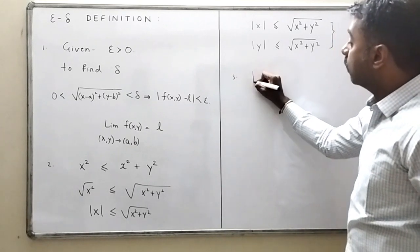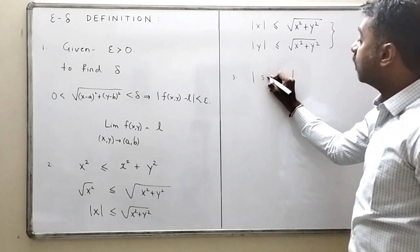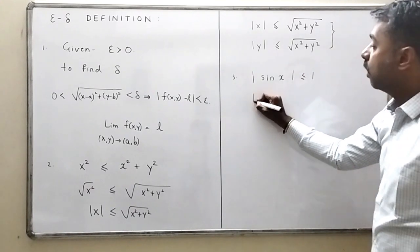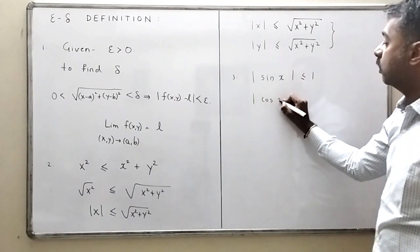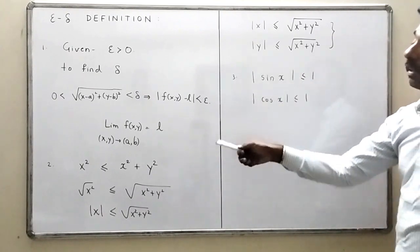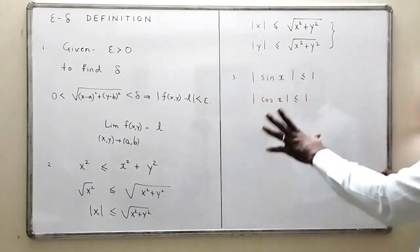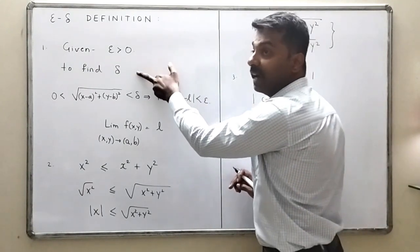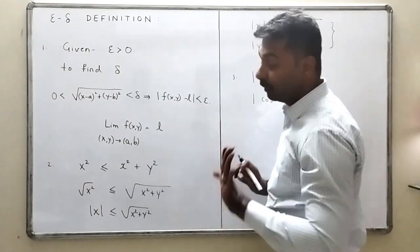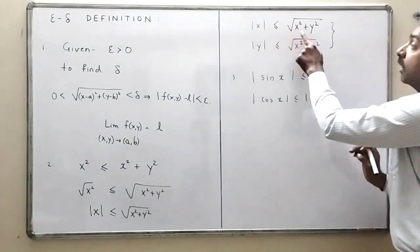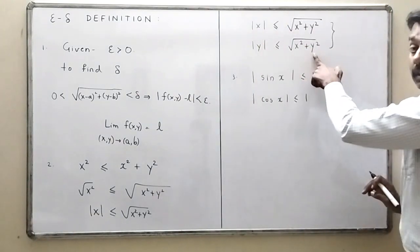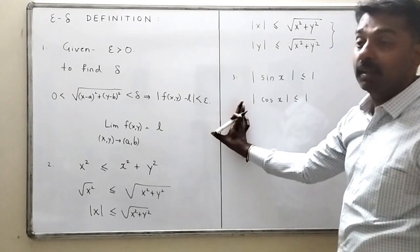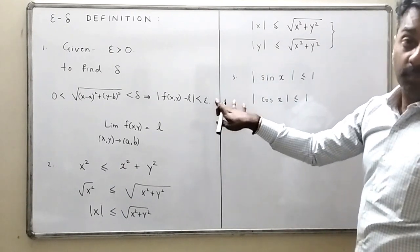The third important thing is that |sin(x)| ≤ 1 and |cos(x)| ≤ 1 always. These three things combined — epsilon is given and I find delta, |x| ≤ √(x²+y²), |y| ≤ √(x²+y²), and |sin x|, |cos x| ≤ 1 — will help us solve the problems. Let us see the first problem now.